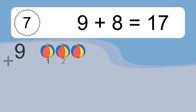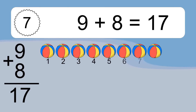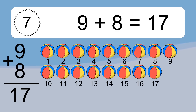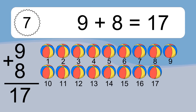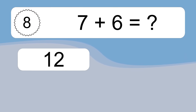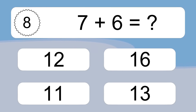9 plus 8 equals what? 9 plus 8 equals 17. Let's count it: 1, 2, 3, 4, 5, 6, 7, 8, 9, 10, 11, 12, 13, 14, 15, 16, 17.